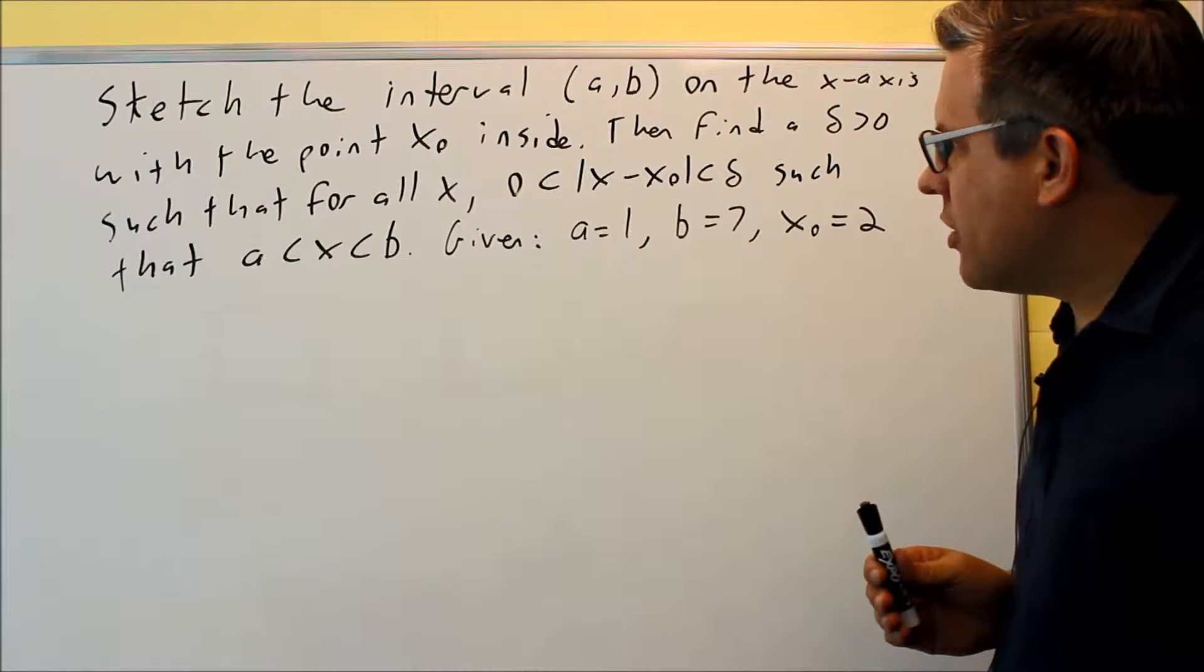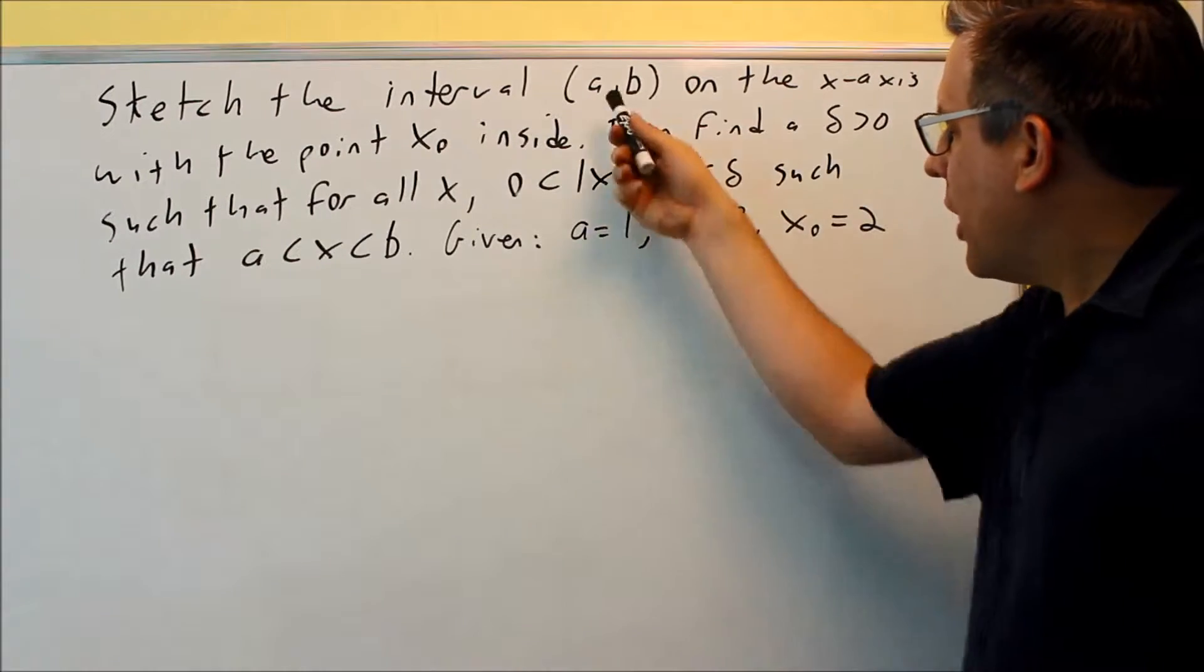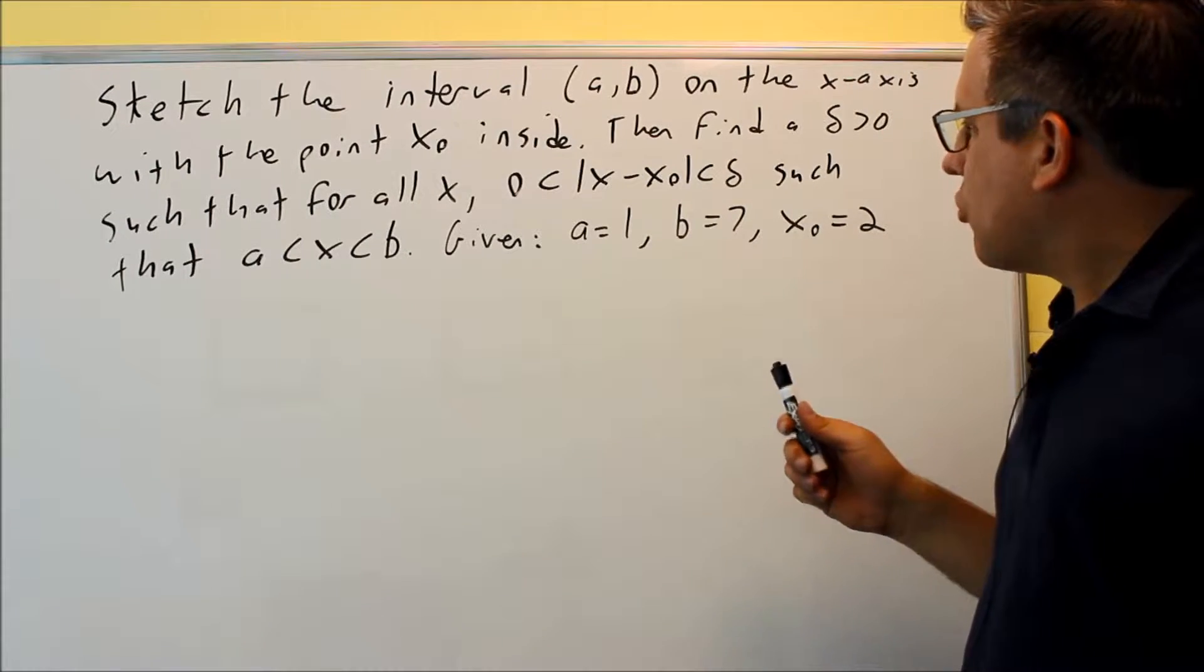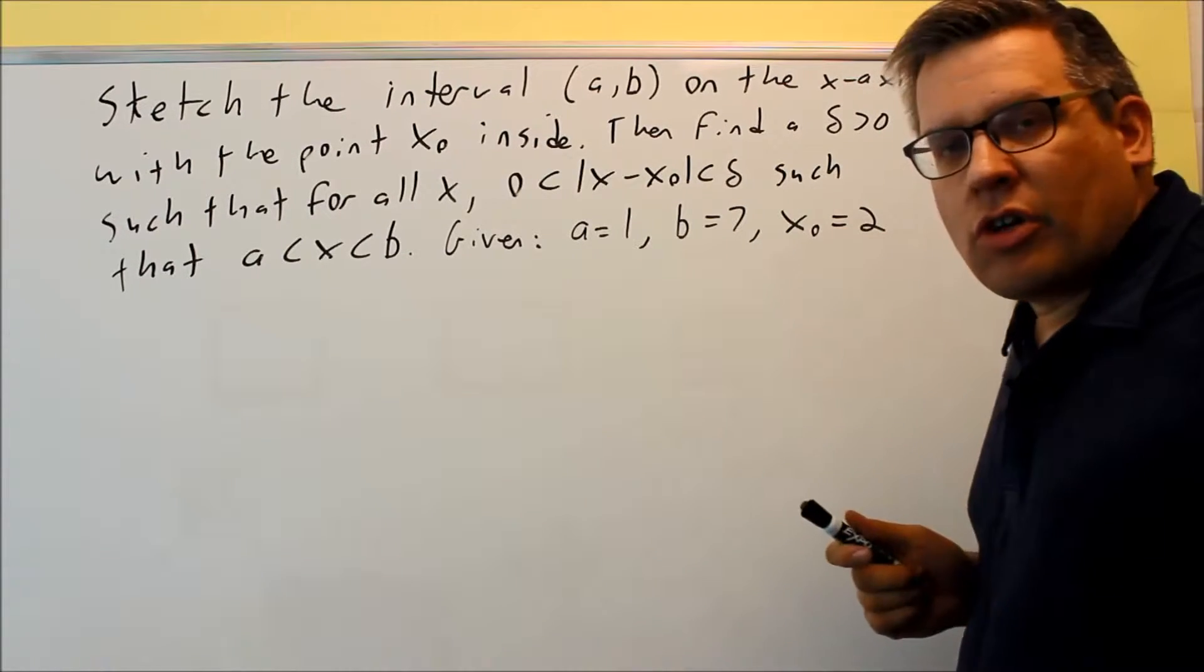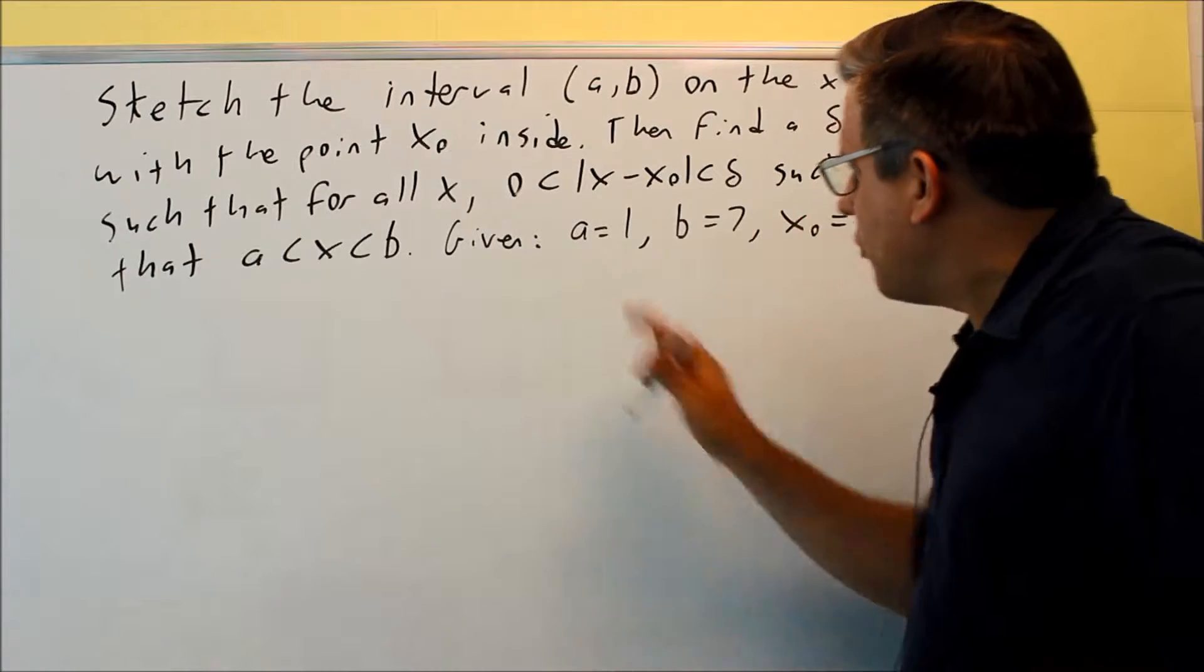So this problem, what they want you to do is they're going to give you some kind of interval. In this case, they give us an interval from A to B, from 1 to 7. They want us to draw the interval with x₀ inside. That's the first thing. So we're just going to draw a number line given this information.